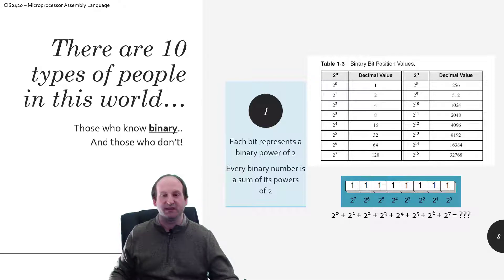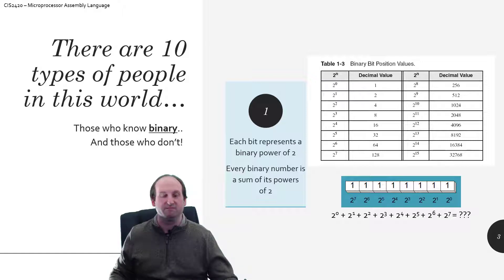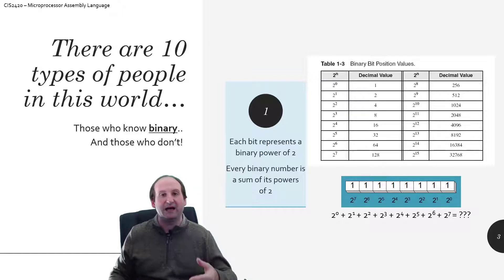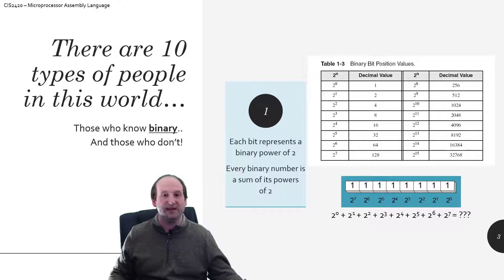The main difference between the decimal and binary number systems is the base power used to determine each digit's value. In base 10, like 512, the 2 is the 1's place, the 1 is the 10's place, and the 5 is the 500's place — giving you 500 plus 10 plus 2 equals 512. In binary, each bit is represented by a power of 2 instead: 2 to the 0th power is the least significant bit (equals 1), then 2 to the 1st, 2 squared, 2 cubed, 2 to the 4th, 2 to the 5th, and so on — giving you the 1's bit, 2's bit, 4's bit, 8, 16, 32, 64, 128, and so forth.